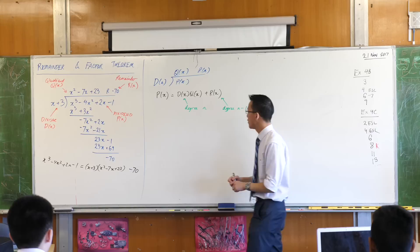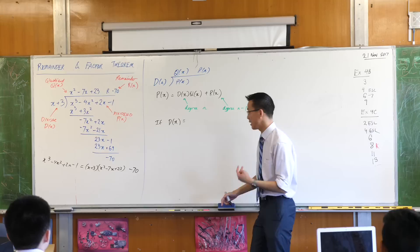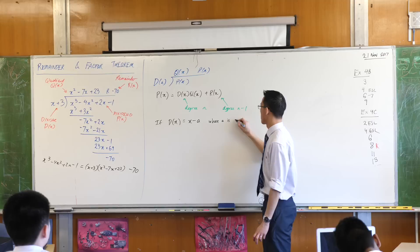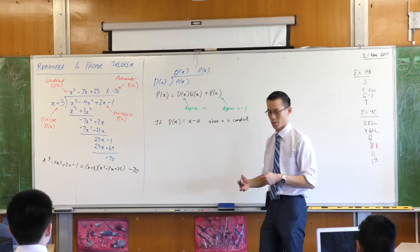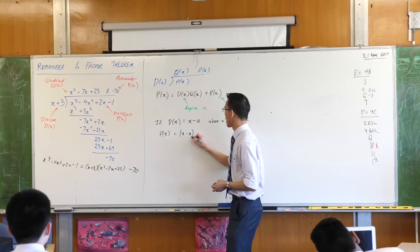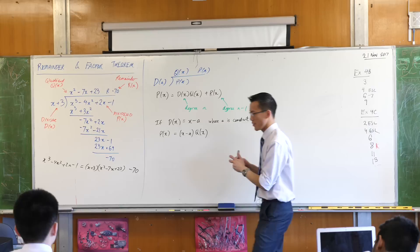If I have a divisor that is monic and linear, these are the most common ones we deal with, where a is a constant, then I can rewrite this statement with some interesting sort of consequences.